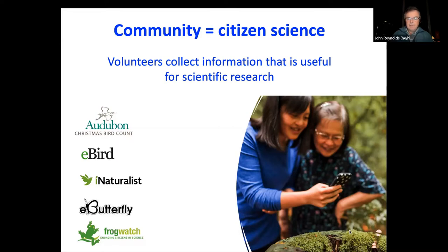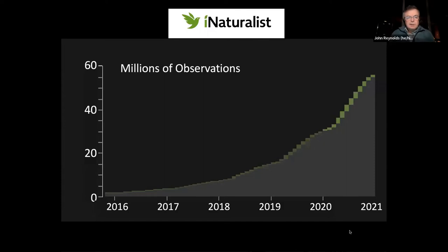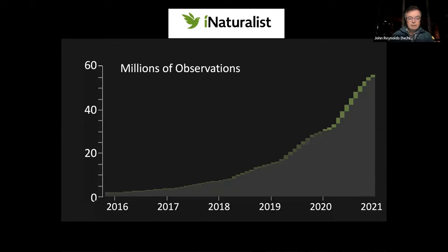These platforms allow people to upload photos or just lists of what they've seen, which can be collated by people who want to use that information for scientific research. Why iNaturalist specifically? Well, here's the growth over the last six years. It really went from zero to 60 million observations in a very short period of time — an exponential rate of growth. Keep that number in mind: 60 million observations as of the end of 2021.